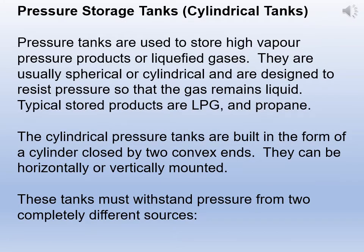Another type of storage tank is the pressure storage tank. Pressure tanks are used to store high vapor pressure products or liquefied gases. They are usually spherical or cylindrical and are designed to resist pressure so that the gas remains liquid. They store products like LPG and propane — C3 and C4, propane and butane. At atmospheric pressure propane and butane are gases; under pressure they are converted to liquid for liquid storage. This type of storage uses pressure storage tanks or cylindrical tanks.